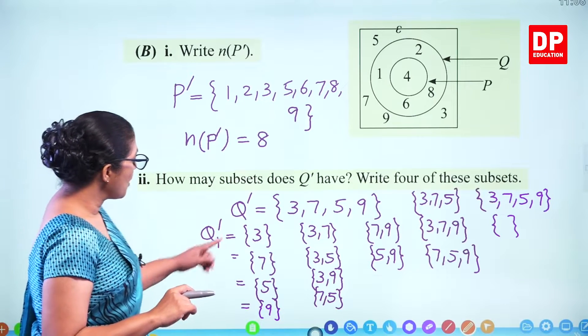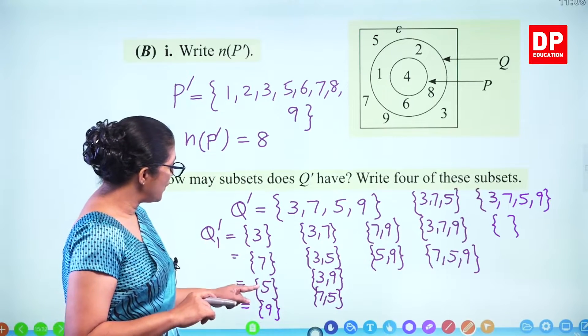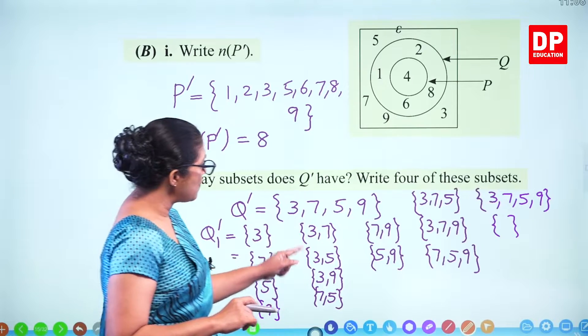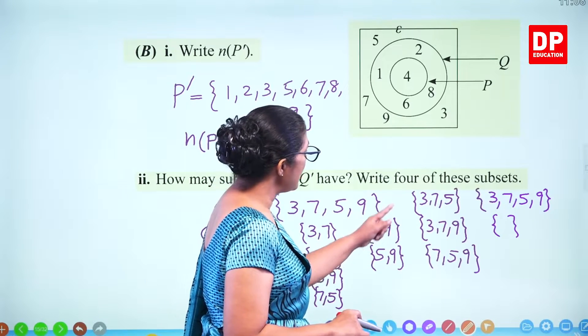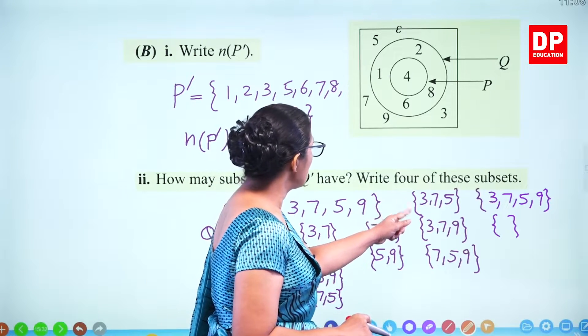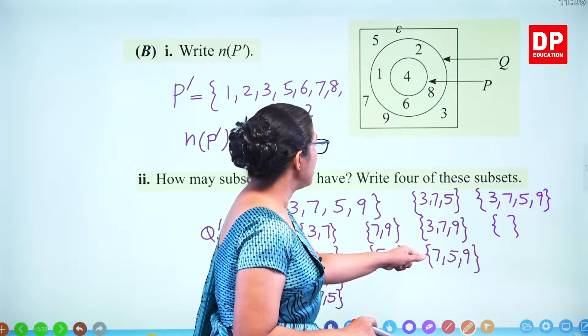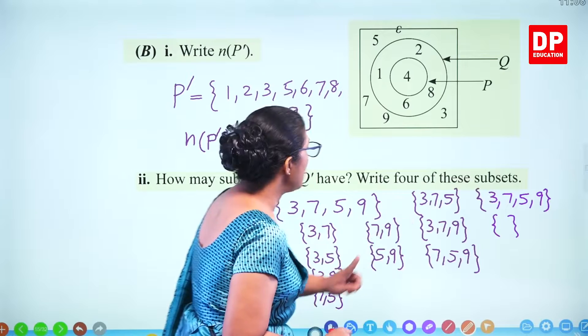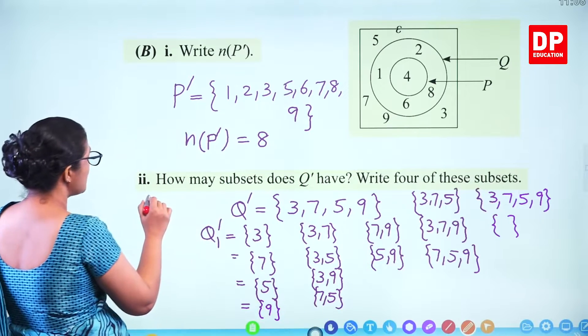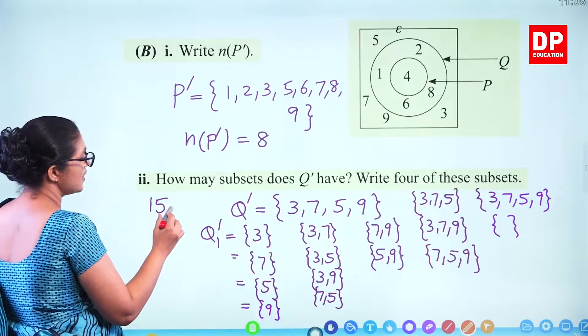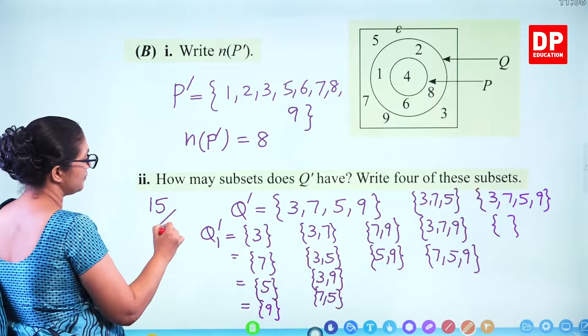So how many subsets are there in total? Counting all: 1, 2, 3, 4, 5, 6, 7, 8, 9, 10, 11, 12, 13, 14, 15 subsets we can write.